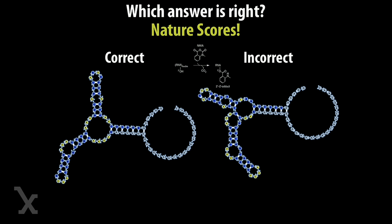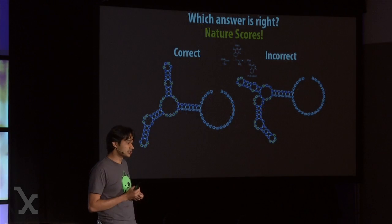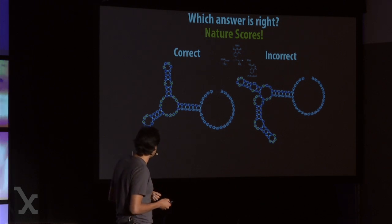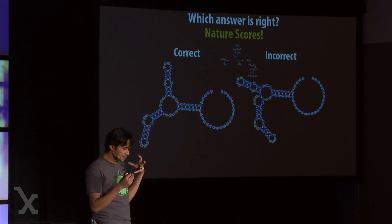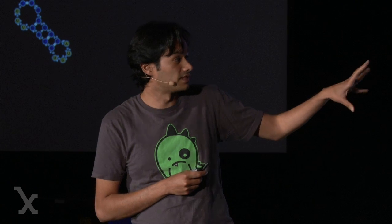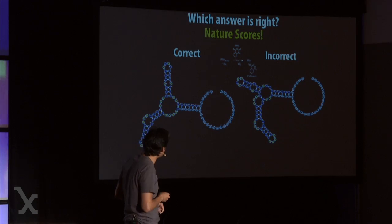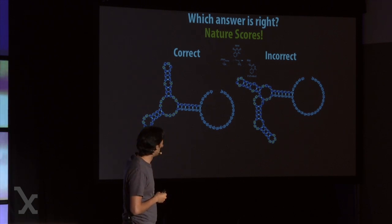No expert and no computer algorithm can discriminate between the two — we have to turn to nature to score these designs. My lab synthesized both and carried out high-throughput chemical mapping, which tells us which letters are reactive to chemicals or not, colored yellow or blue respectively. On the left, the chemical mapping pattern lines up almost perfectly with the design — this design appears to fold up correctly. The right-hand design is almost right, but the chemical mapping in the central loop is off, and this RNA is more likely to misfold. That kind of error would totally throw off an RNA therapy.